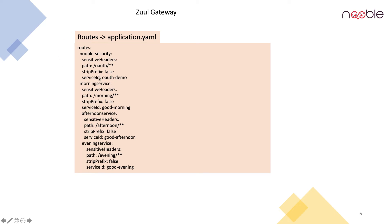When it comes to the Zuul gateway, I specify routes where the service ID is the name of the application given in the property file and the path is the URL pattern. Anything coming with /auth will be redirected to the auth demo application. Anything coming with /morning (using wildcards) will be redirected to the good morning service. The same applies for afternoon and good evening. I won't detail Zuul gateway and Eureka further here as I have done a dedicated session on that — I'll put the card and link on YouTube.